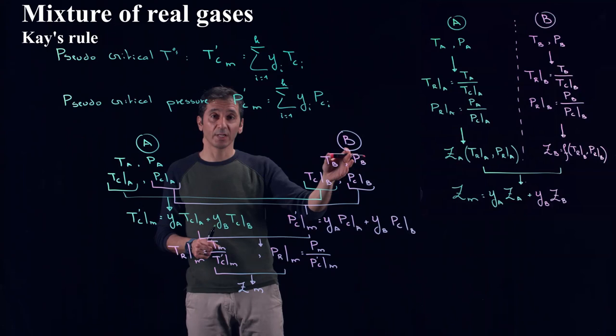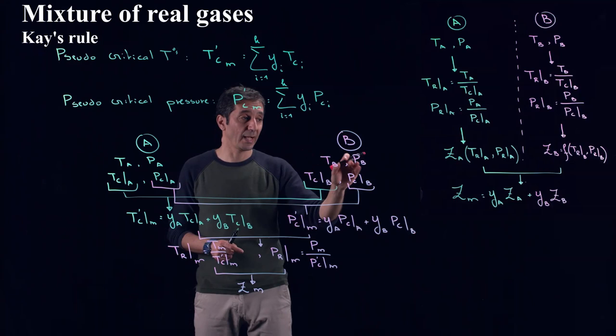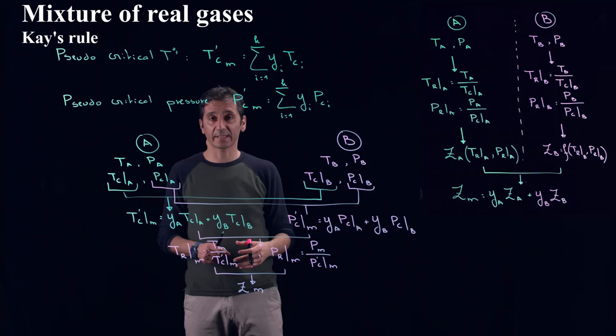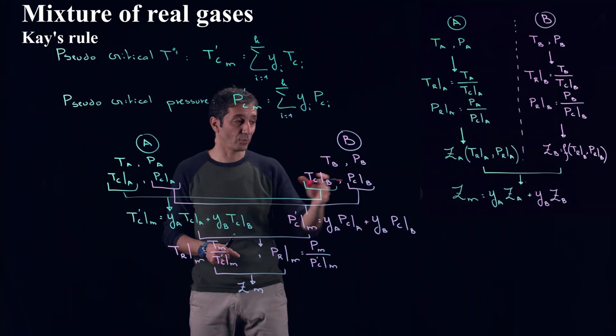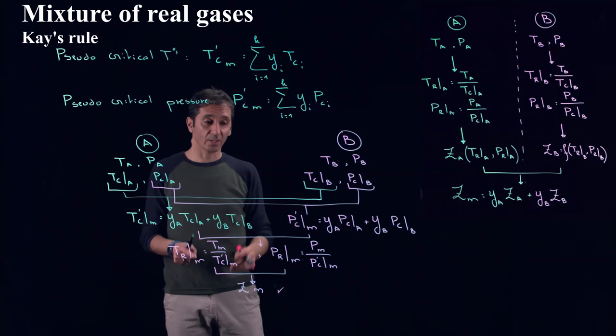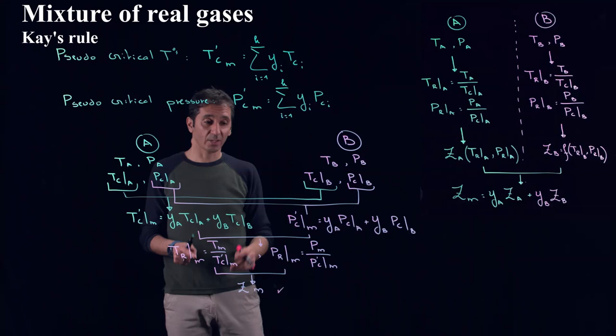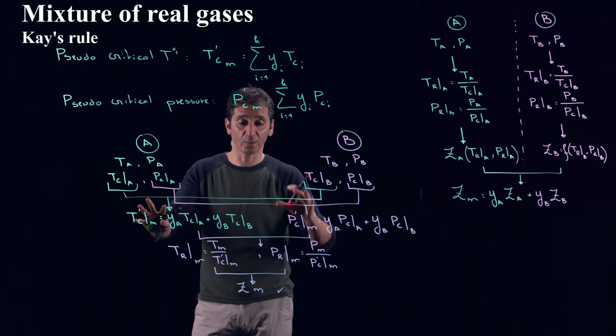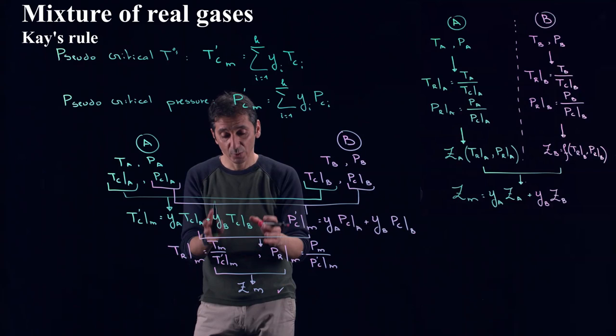The second thing is that in our previous approach, how many times we had to use our compressibility chart in this example? We had actually to use it twice, ZA and ZB. If you have K components, you will be getting K values of Z for each component. While here in Kay's Rule, how many times actually we use the compressibility chart? We use just once. Because we combined all our gases at an earlier stage to get our pseudocritical temperature and pseudocritical pressure. And then from this, we got only one single value for ZM that we can plug in our PMVM equals ZM and MR universal T.